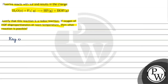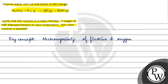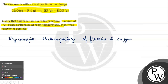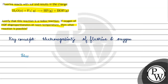The key concept for this question is the electronegativity of fluorine and oxygen. If we compare the electronegativity of fluorine and oxygen, then fluorine is the most electronegative element.